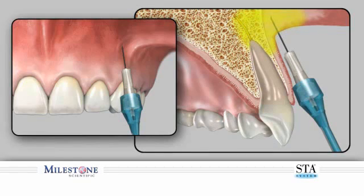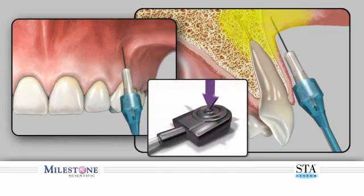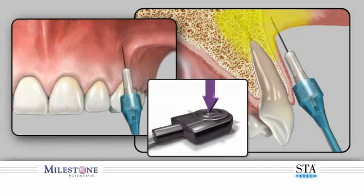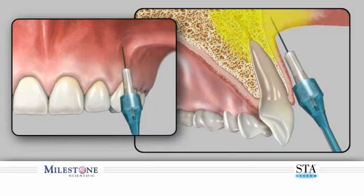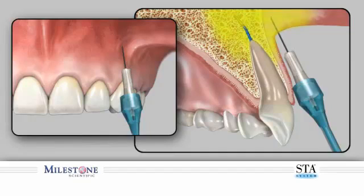Once you have achieved a negative aspiration, it is recommended that you administer at least one quarter of the cartridge at the control flow rate before transitioning to the rapid flow rate. To enter into the rapid flow rate, depress the foot control pedal beyond the halfway down position. This will allow you to enter the second, more rapid flow rate in which you can administer the remaining amount of anesthetic solution. This should only be used after your patient indicates that effective soft tissue anesthesia has occurred.